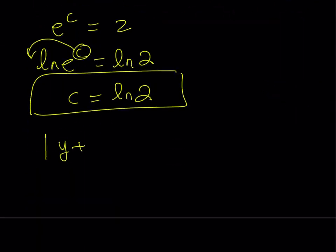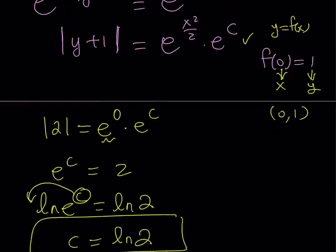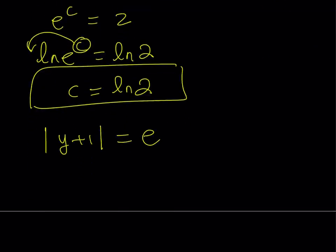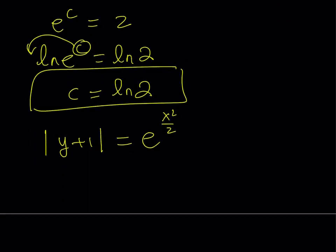The absolute value of y plus 1 equals e to the power x squared over 2. That's unchanged. And then we have times e to the power c. Of course, we've done some work and then we're going to reverse it. That's not necessary, but it doesn't always work that way. That's why I wanted to show you how to find the c from here.